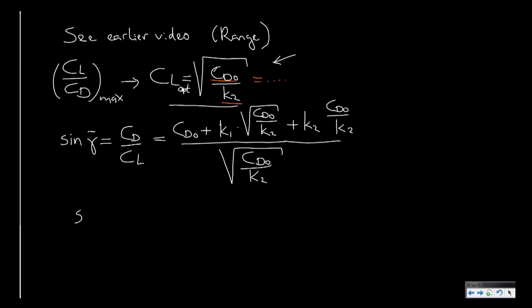I find that the sine of the descent angle should be equal to 2 times CD0, because I have one CD0 here, and then I have a CD0 over there, divided by the square root of CD0 divided by k2